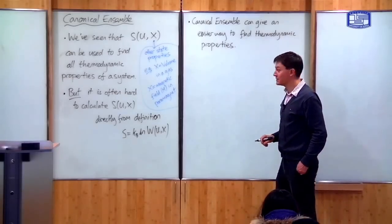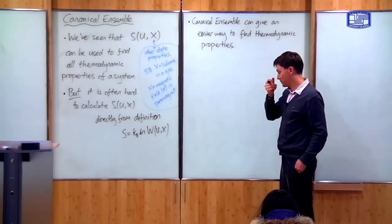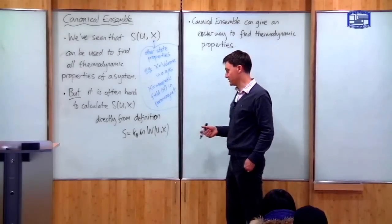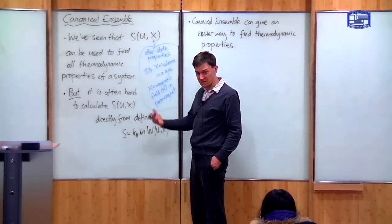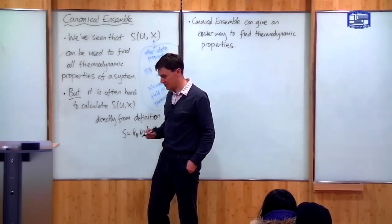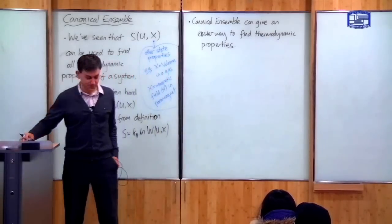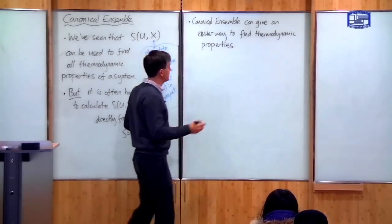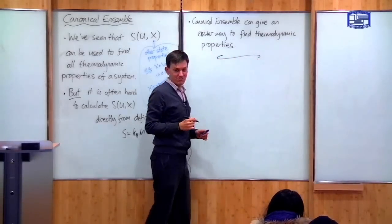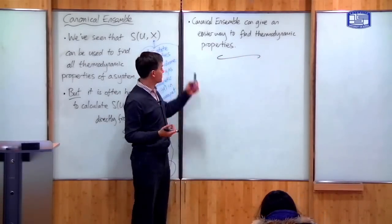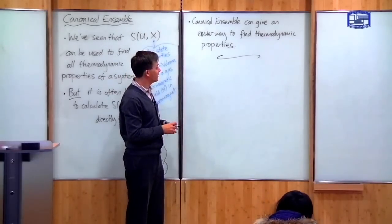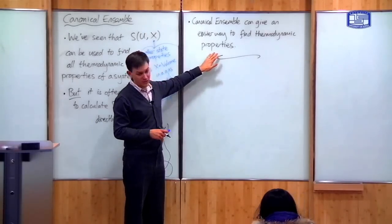The canonical ensemble is still based upon the fundamental postulate and Boltzmann's definition of entropy, but it doesn't use it directly — we don't directly calculate the entropy from the definition. These points serve to motivate why we're discussing this: to give us a new theoretical way of finding thermodynamic properties.